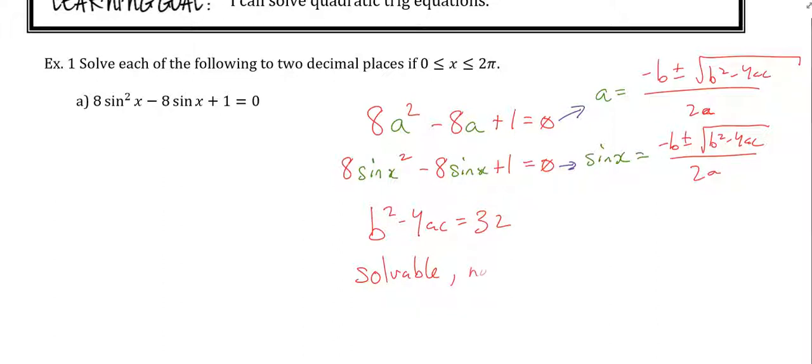But not factorable. That's what b² - 4ac tells us. 32 is not a perfect square, so it's not factorable. So I have to use the quadratic formula.